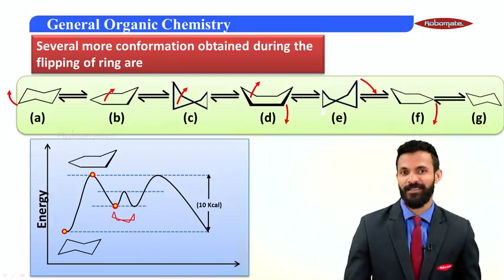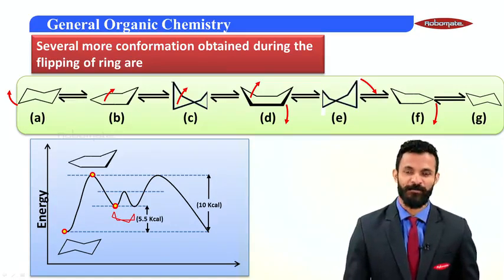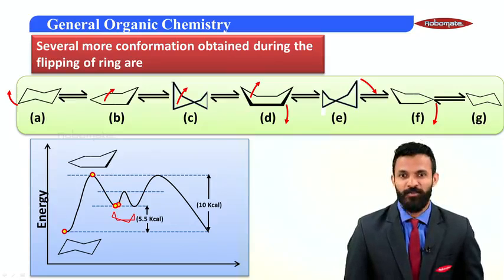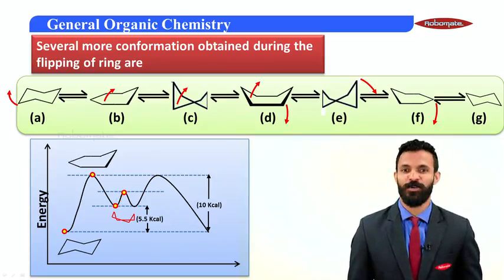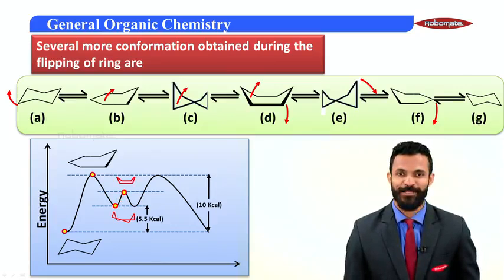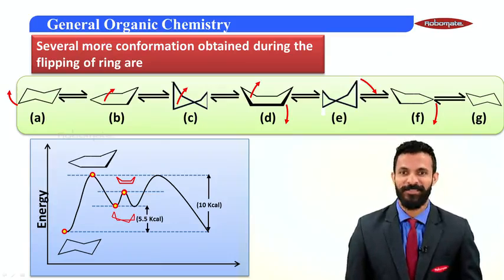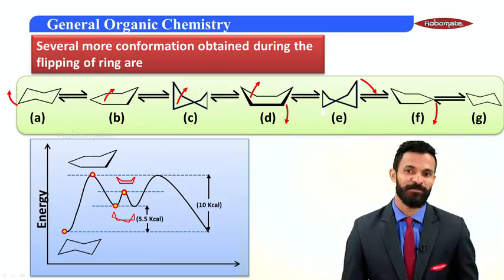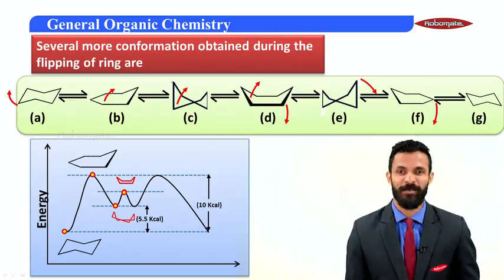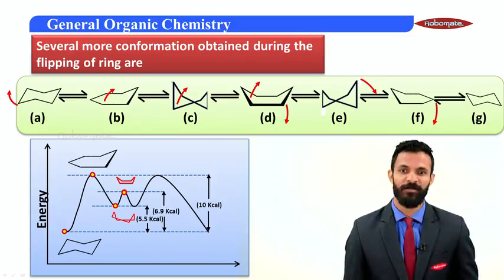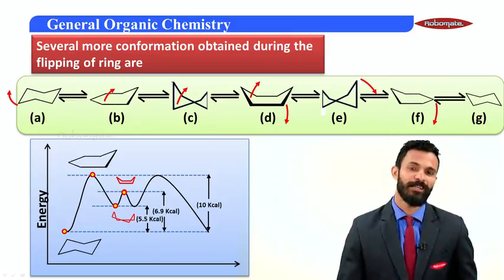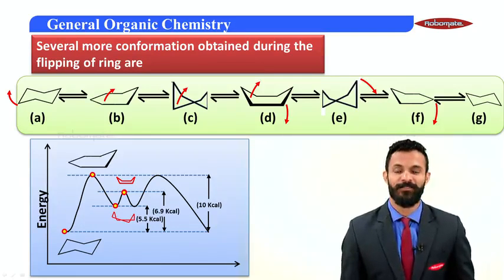This twist boat is higher in energy compared to the chair conformation by 5.5 kilocalories. Further flipping pushes this twist boat into the boat conformation. This boat conformation is important from an examination point of view — it is separated by an energy barrier of 6.9 kilocalories in comparison to the chair conformation.